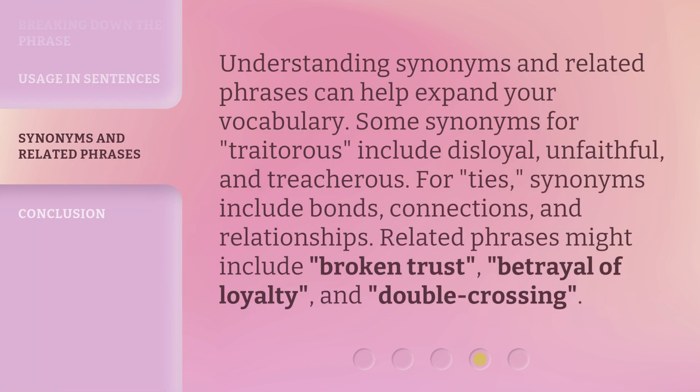Understanding synonyms and related phrases can help expand your vocabulary. Some synonyms for Traitorous include Disloyal, Unfaithful, and Treacherous. For Ties, synonyms include Bonds, Connections, and Relationships. Related phrases might include Broken Trust, Betrayal of Loyalty, and Double Crossing.